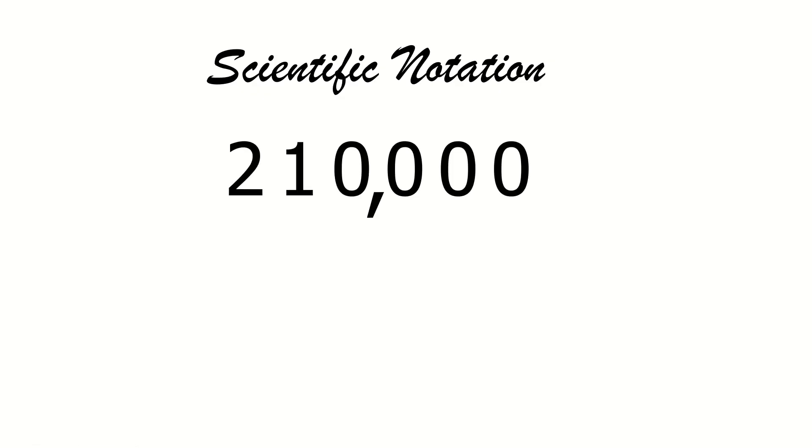Next example is 210,000. Same process. We are going to locate the new decimal point. Where should we place the decimal point? Remember, there must only be one non-zero digit at the left side of your decimal point. Very good. You're going to place it there, in between 2 and 1. Good job.